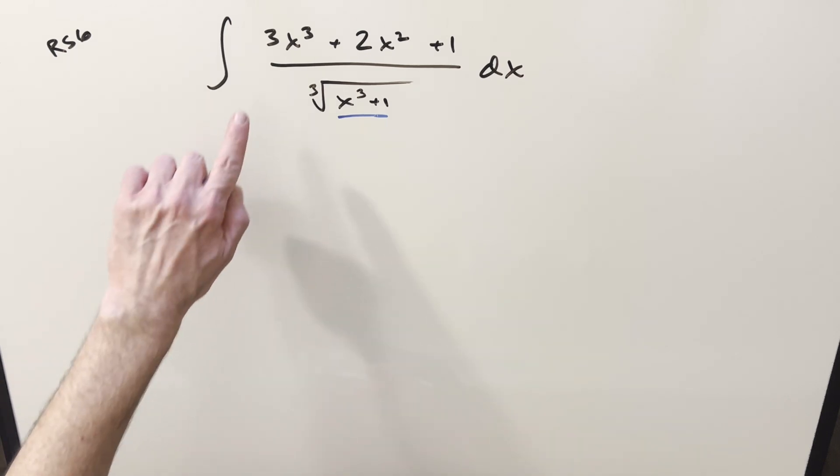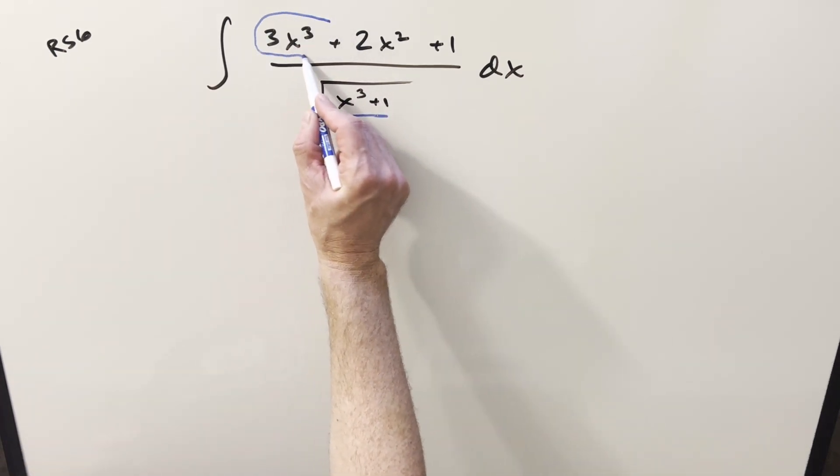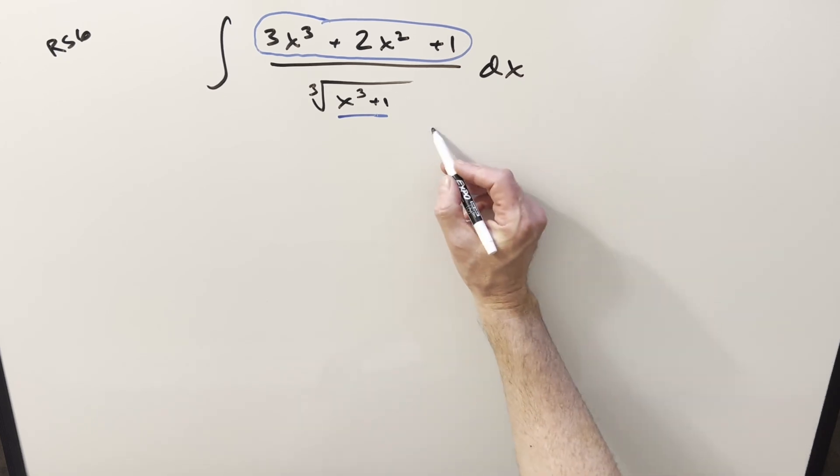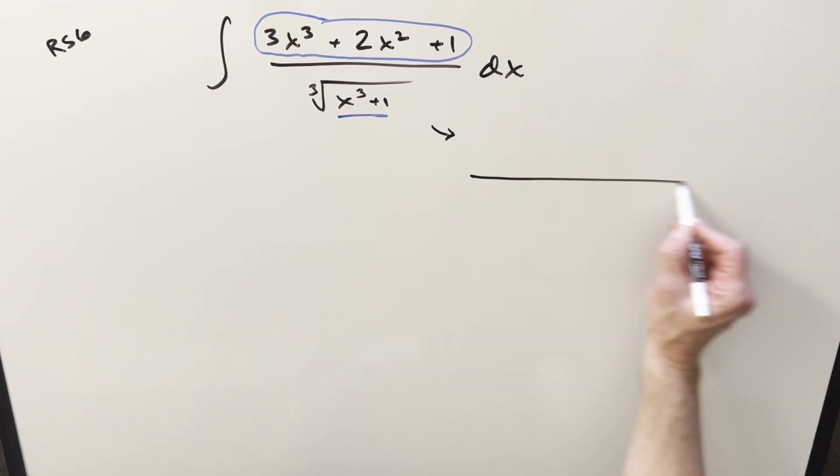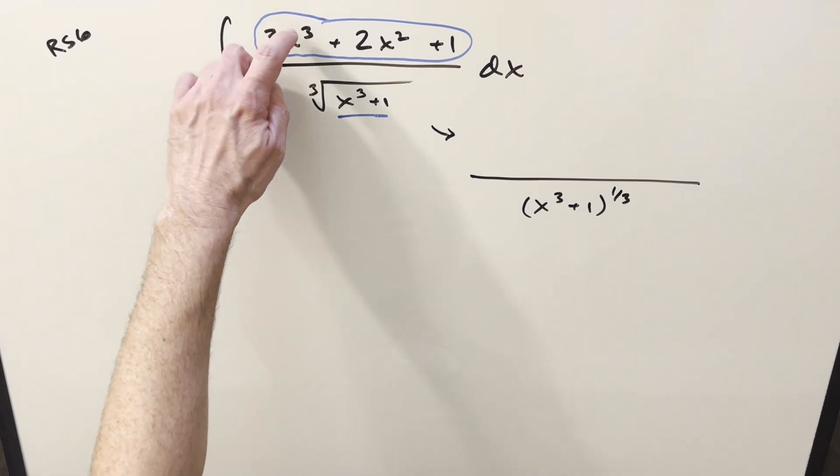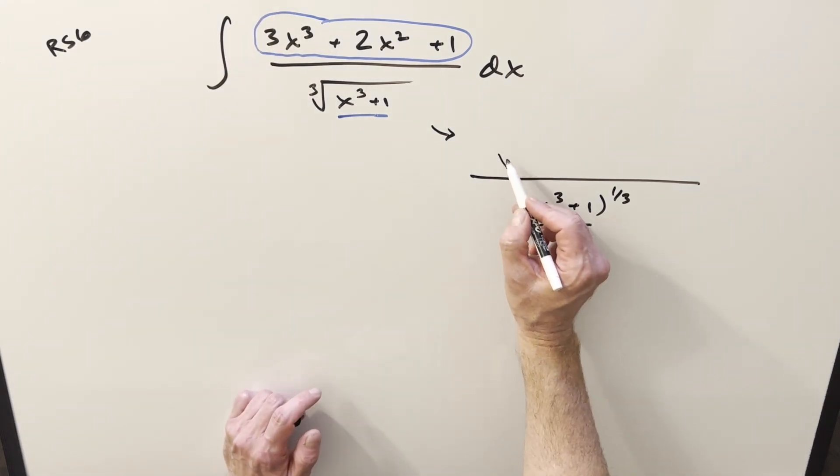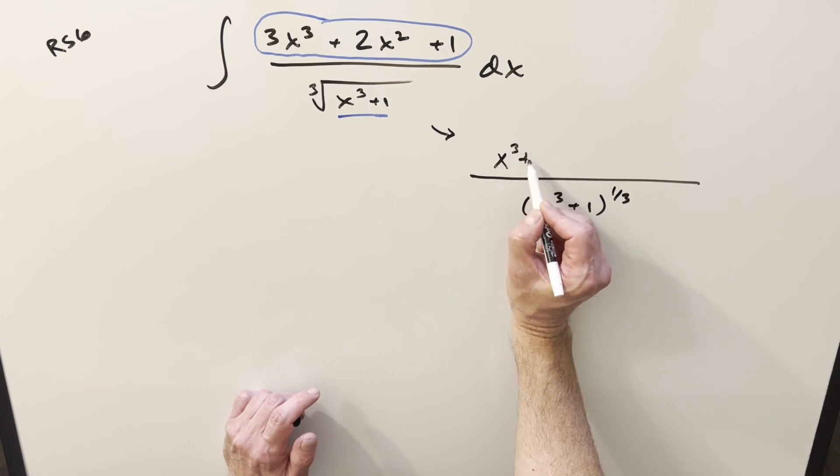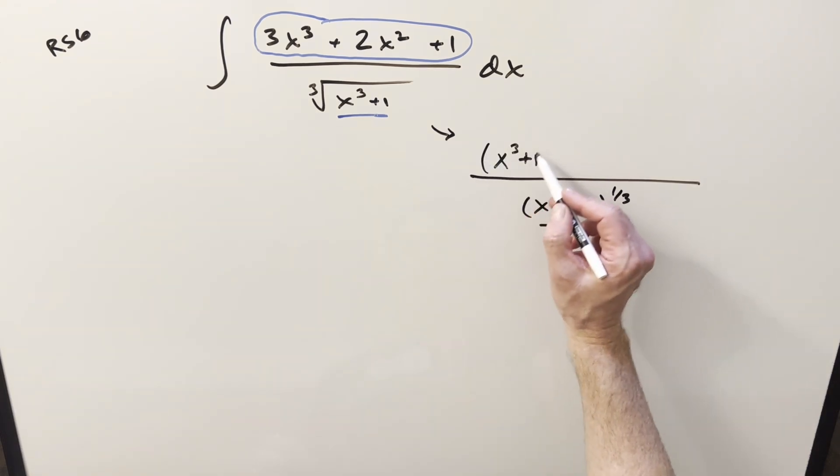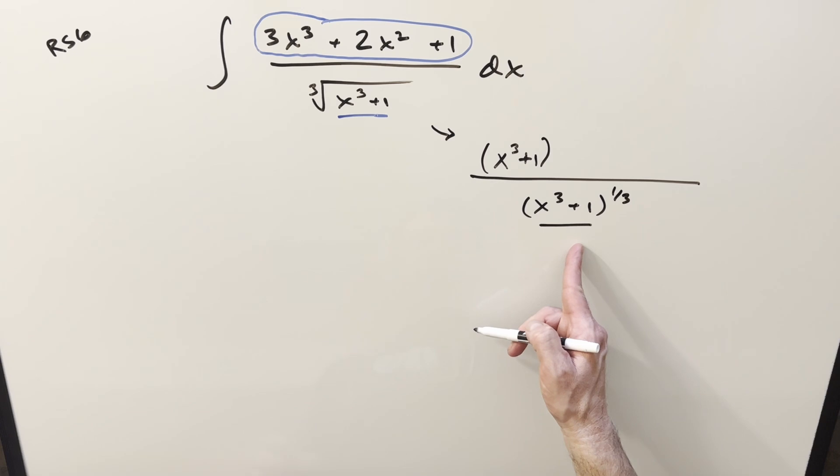So for algebra, really what I need to do is I think I need to factor this. What I want to do for this fraction, we're going to have the numerator. I'm going to write the, sorry, the denominator. I'm going to write this as x cubed plus 1 to the 1/3. And then out of this, at least we have x cubed terms. So what I'm going to do is kind of force this thing to happen in the numerator. So I'm going to kind of create an x cubed plus 1.